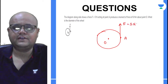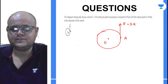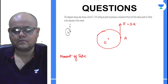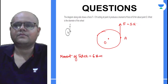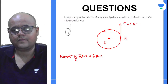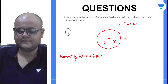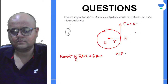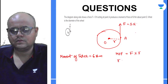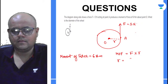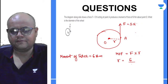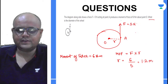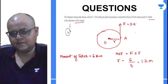In the next question, a force of 5 N is acting at point A and produces a moment at point O. Applying the formula, R = 6/F, giving 1.2 meters. The question asks for the diameter of the wheel.